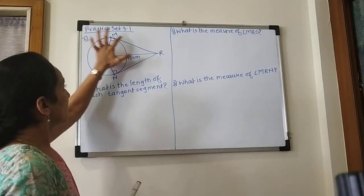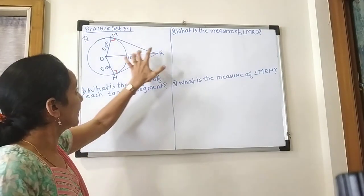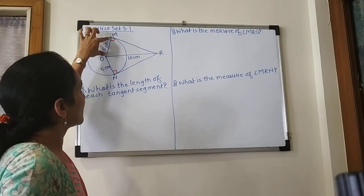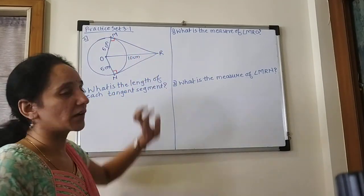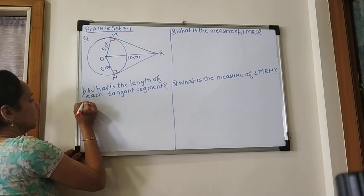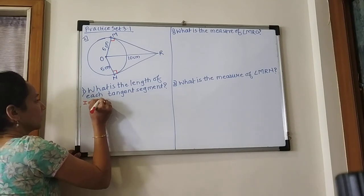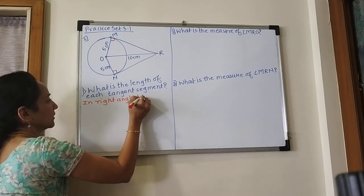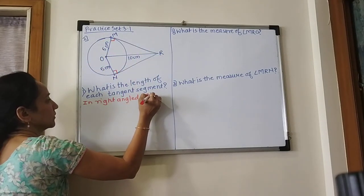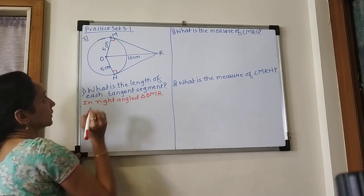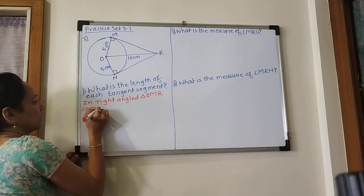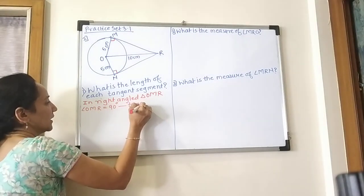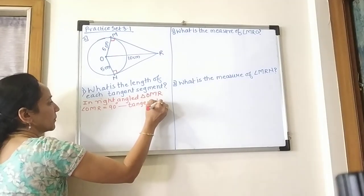If the triangle OMR is cut from this angle, then OR is the hypotenuse. If you have this angle, OM is 5 cm. We will work with this right angle triangle OMR. Angle OMR is equal to 90 degrees because tangent is perpendicular to radius.